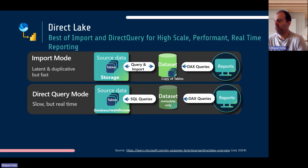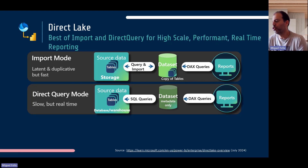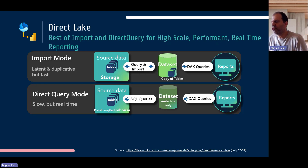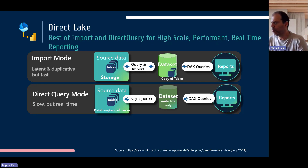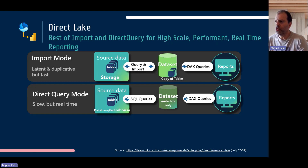There was also a third method — the composite model. As a best practice, dimension tables were set to import or dual mode, while fact tables were in Direct Query mode. This allowed slowly-changing dimension tables to refresh quickly since they're small, while the large fact tables used Direct Query. It's a mix between both modes — not ideal, but it was an important option for getting real-time data.